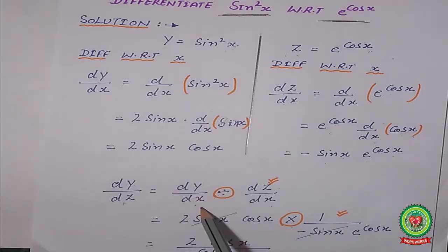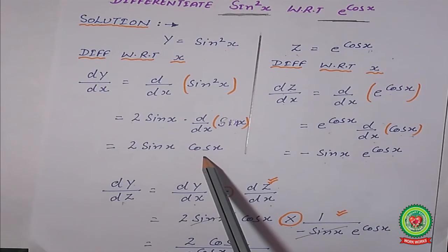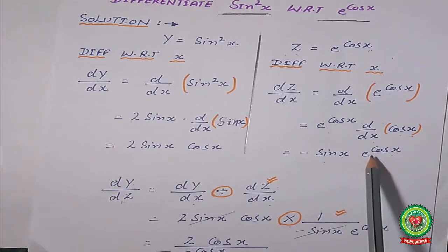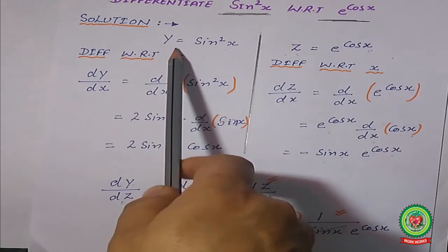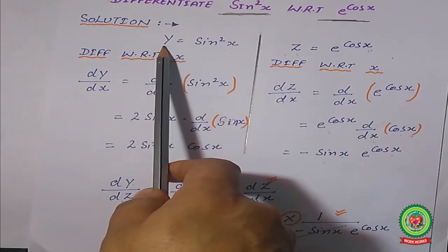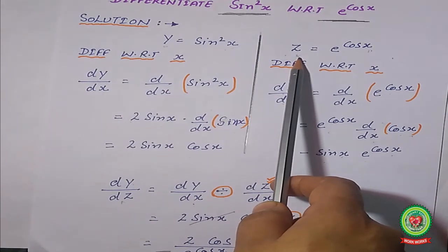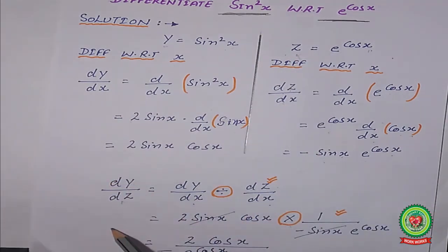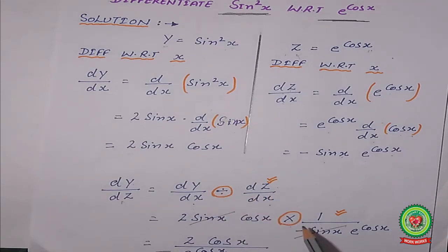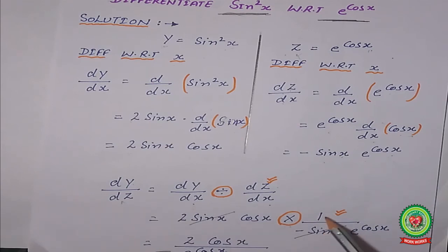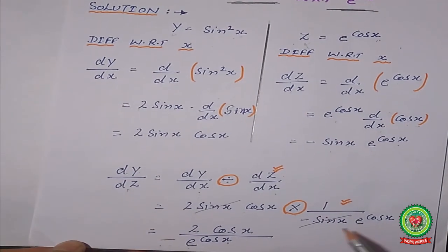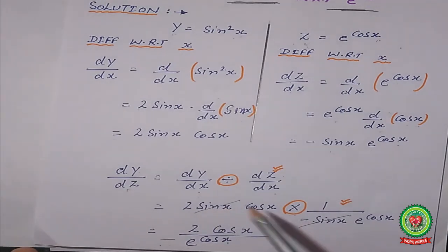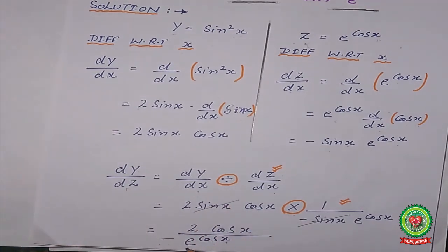The dy/dx statement is 2 sin x · cos x, and the dz/dx is −sin x · e^(cos x). One function is y giving dy, and the other function is z giving dz. We want the answer in dy/dz. Dividing and converting to multiplication, the second term becomes its reciprocal: −1 / (sin x · e^(cos x)). Cancelling sin x terms, we get the answer: 2 cos x / (−e^(cos x)), i.e., −2 cos x · e^(−cos x).